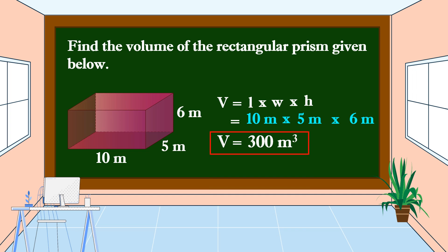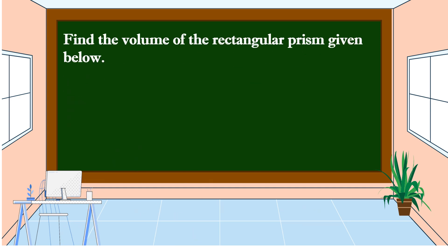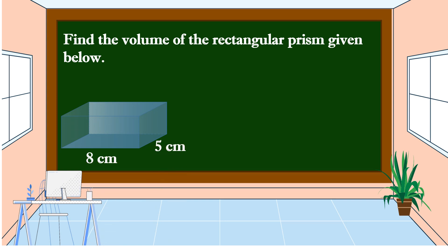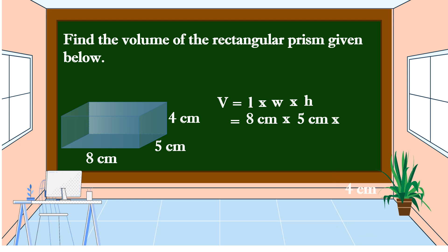This is the volume of this rectangular prism. Another example: find the volume of the rectangular prism given below with a length of 8 centimeters, a width of 5 centimeters, and a height of 4 centimeters. To get the volume, we are going to use this formula: Volume is equal to length times width times height. The length is 8 centimeters times the width of 5 centimeters times the height of 4 centimeters.